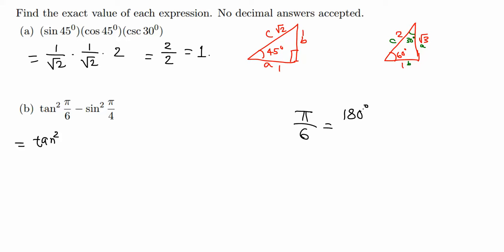So that's the same as 30 degrees minus sine squared pi over 4. If we replace pi by 180 degrees divided by 4, that will be 45. Next, tangent 30. Let's go to this triangle with 30 degrees. Tangent is b over a, so 1 over root 3.